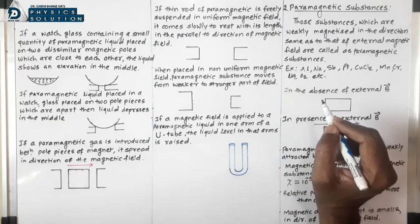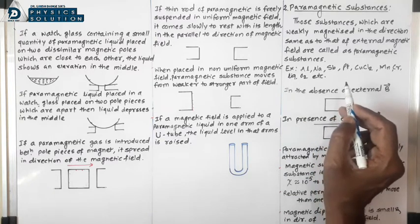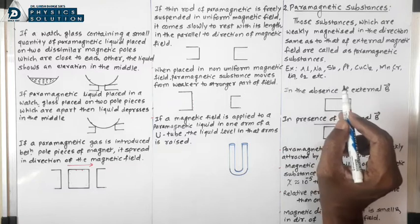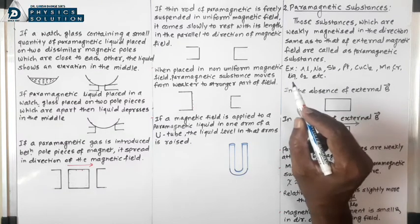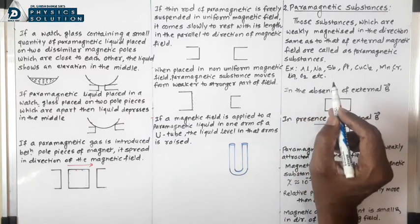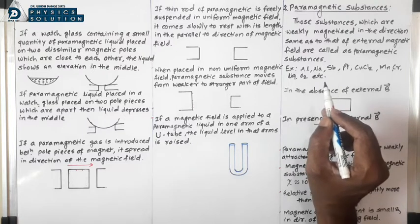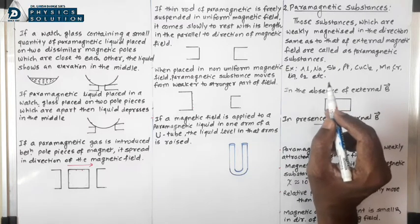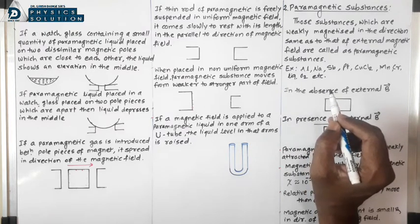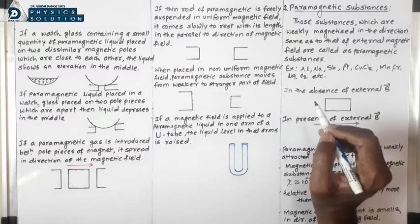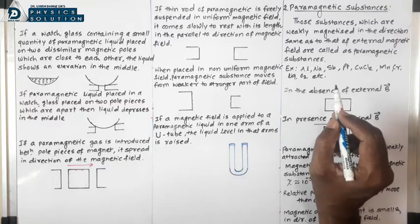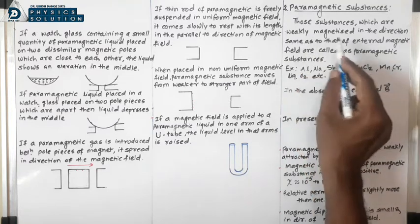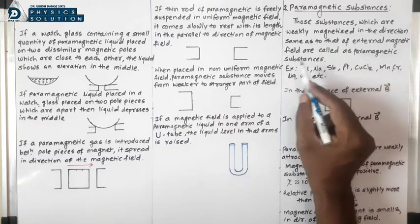Paramagnetism is found to exist in substances whose atoms or molecules have an excess of electrons spinning in the same direction. These substances have an excess of electrons spinning in the same direction, so they have some magnetic dipole moments. Therefore they magnetize quickly in the direction same as that of the external magnetic field.